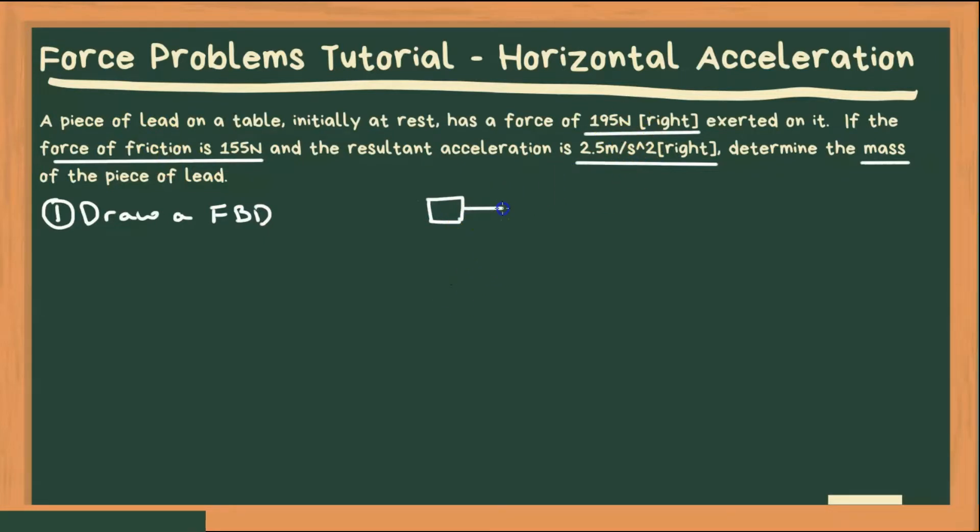we have an applied force to the right of 195 newtons. We have a frictional force. Now since it's accelerating to the right and it started from rest, I know it's moving to the right, and friction usually acts in the opposite direction of motion. So we have a frictional force to the left of 155 newtons.